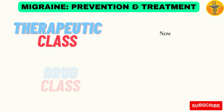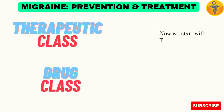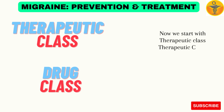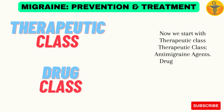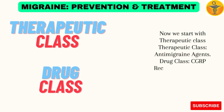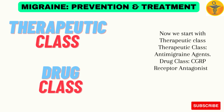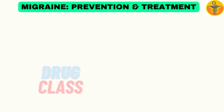Now we start with Therapeutic Class: Anti-migraine Agents. Drug Class: CGRP Receptor Antagonists.